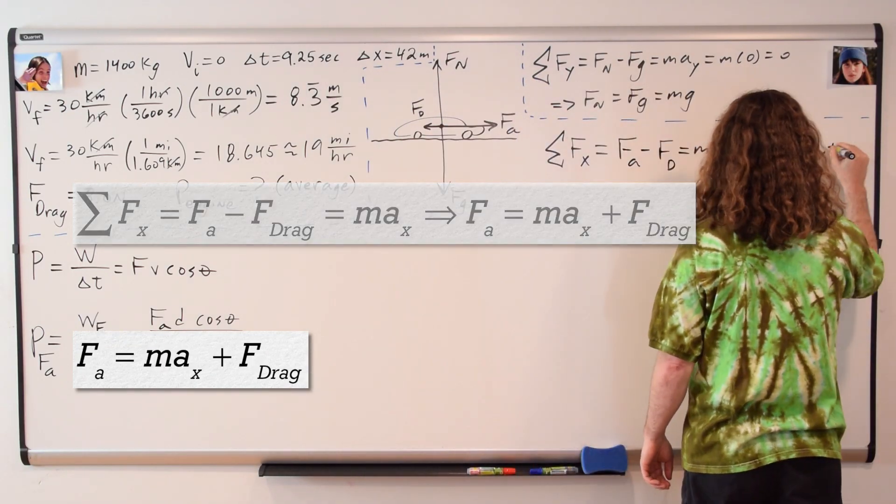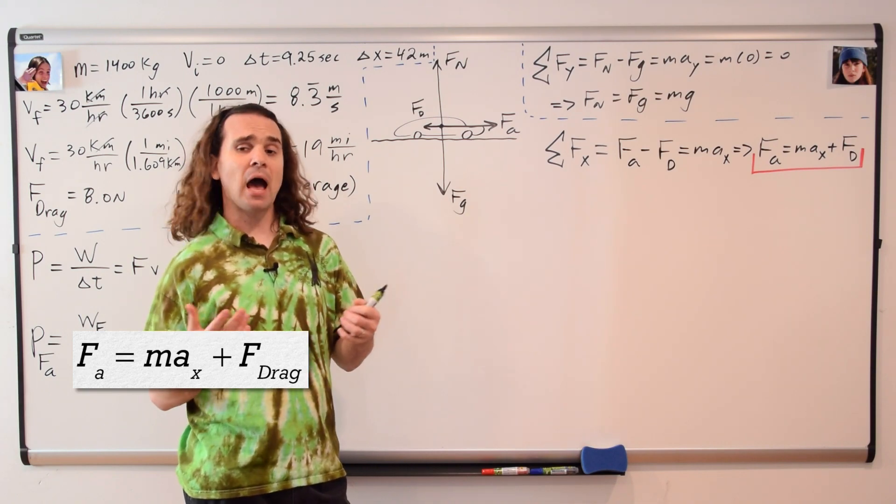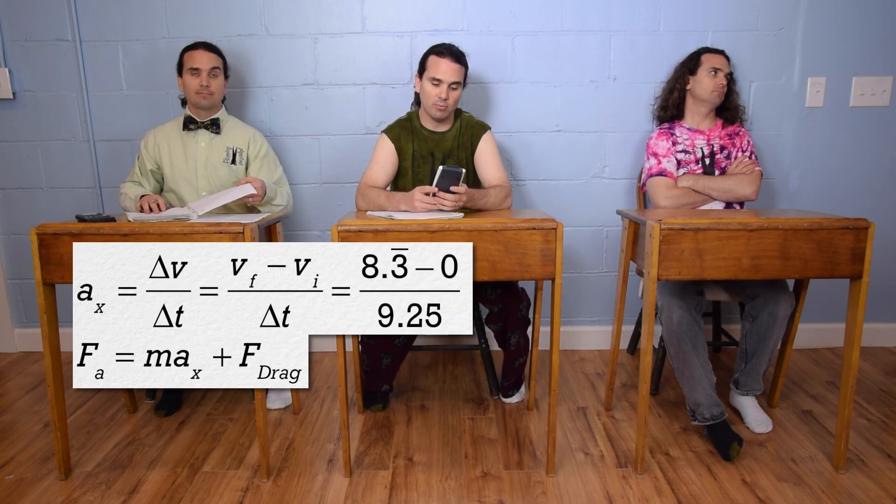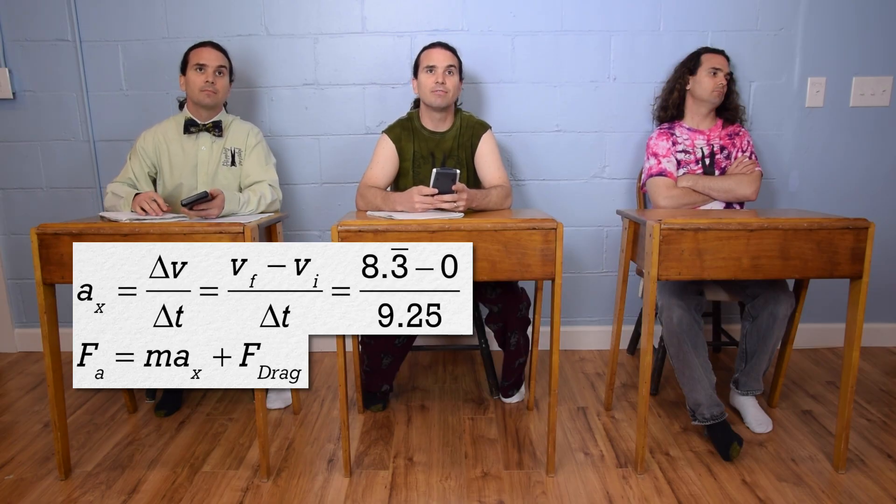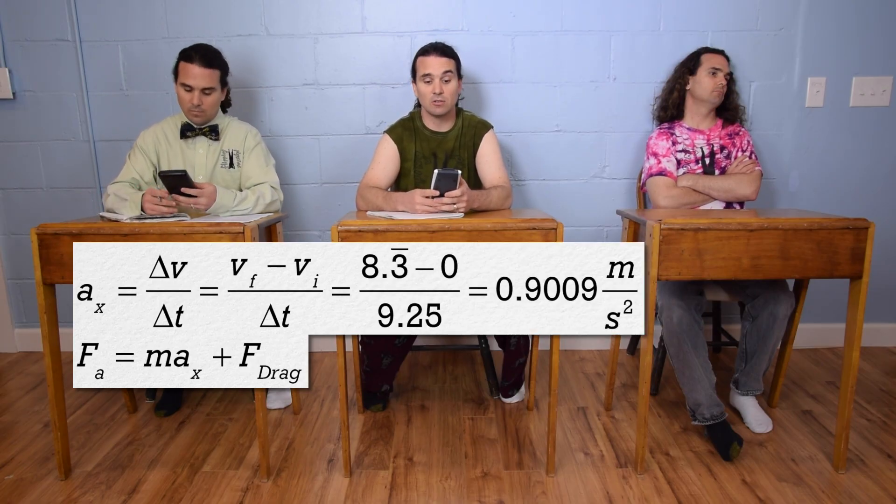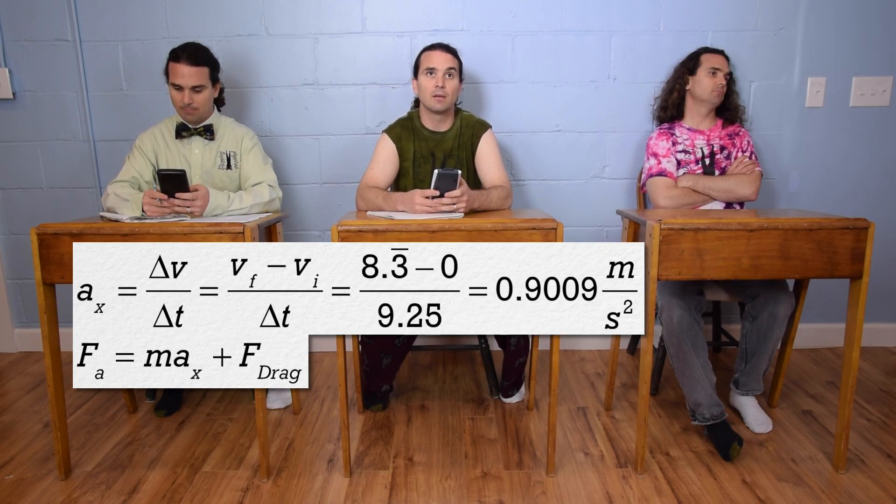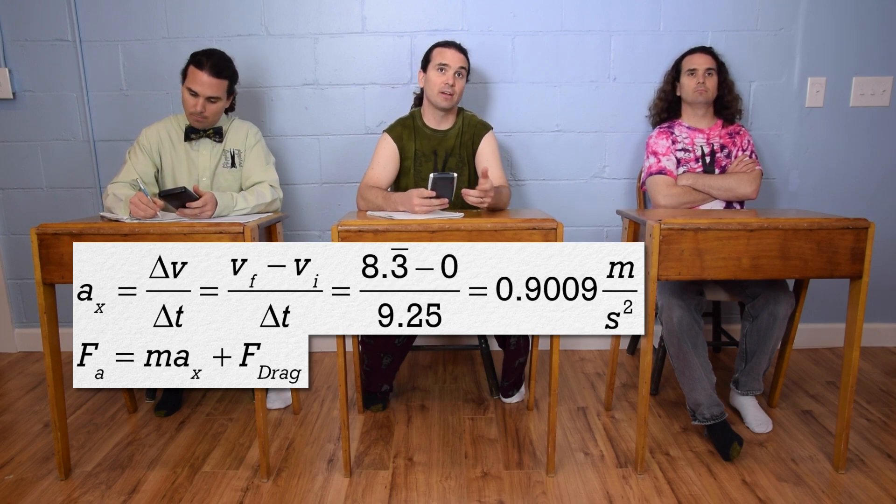Bobby, we need the acceleration. How are we going to find it? The equation for acceleration is acceleration equals change in velocity over change in time. So, final velocity minus initial velocity divided by change in time, or 8.3 repeating minus zero divided by 9.25, which is 0.9009 meters per second squared, which we can plug back into the holstered equation.